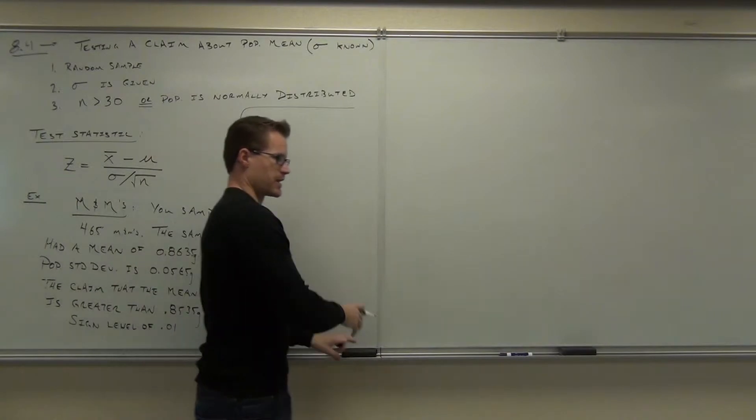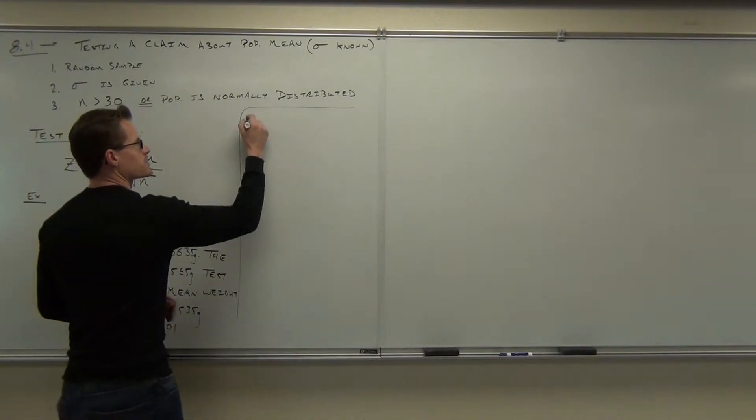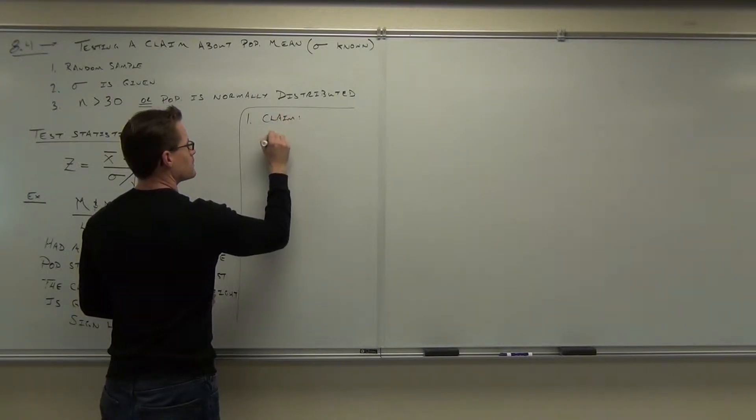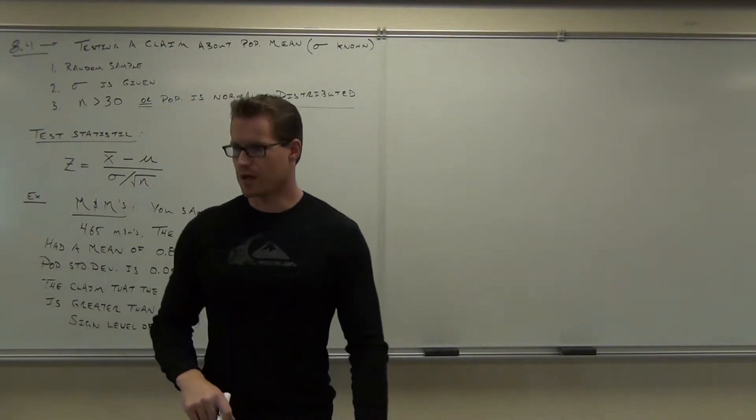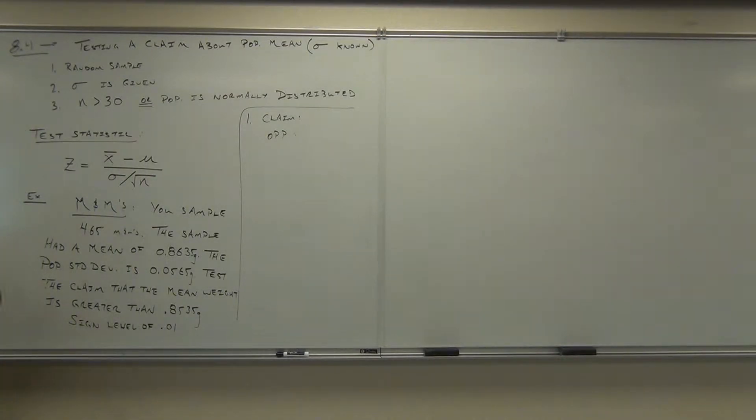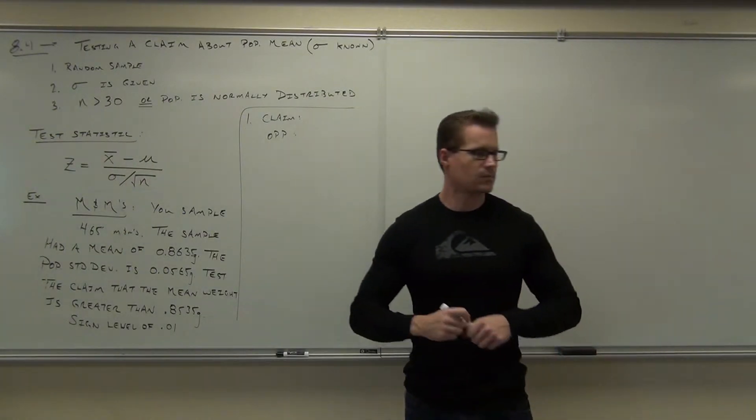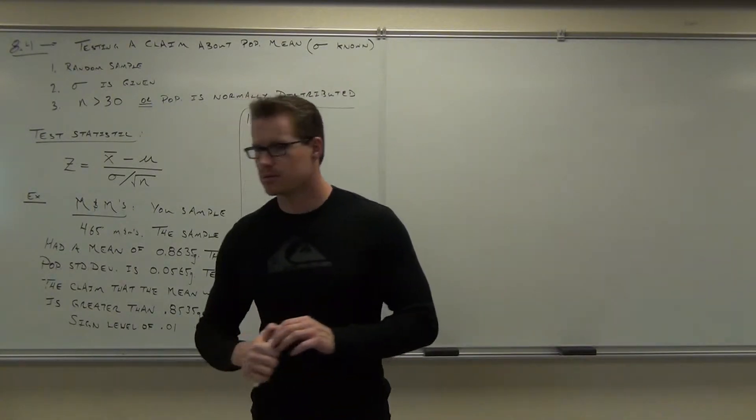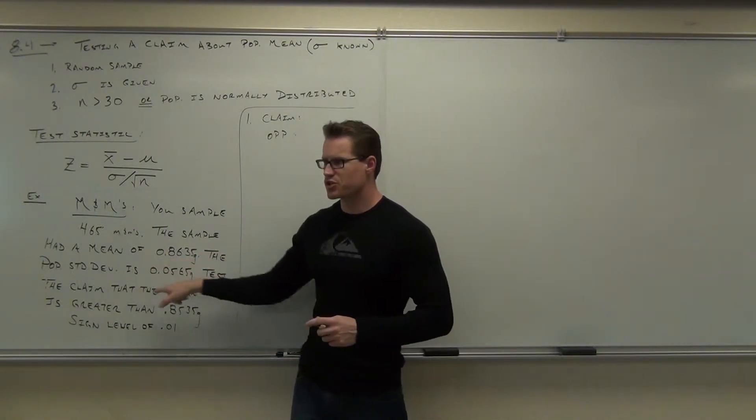We're going to do our four steps right here, and I'll show you the difference between p-value and traditional, just like I normally do over on the right-hand side of the board. Now, step number one says, what are you supposed to do? Claim and opposite. I did this on purpose to you. I gave you a number that's between zero and one, just to make sure you can still see the difference.